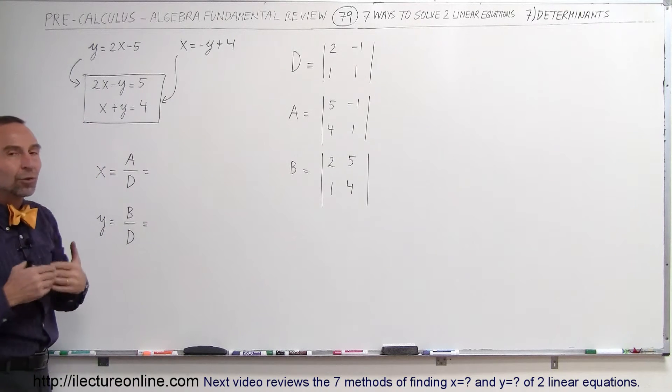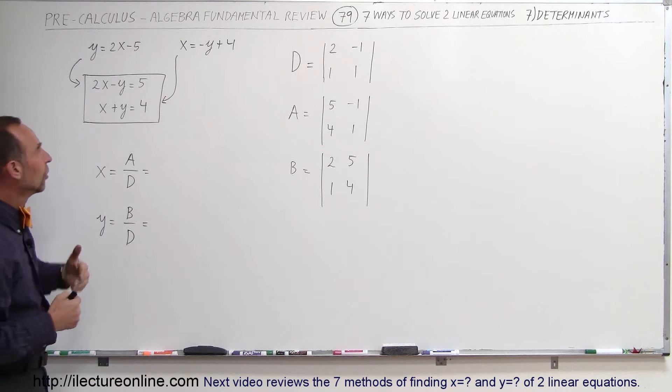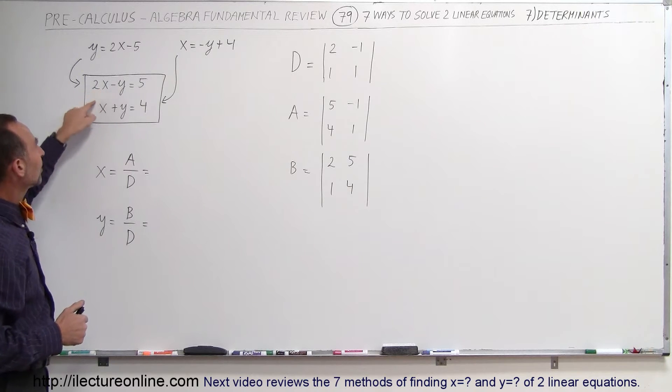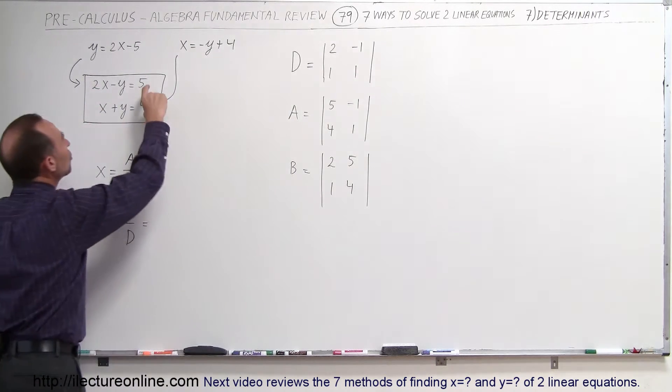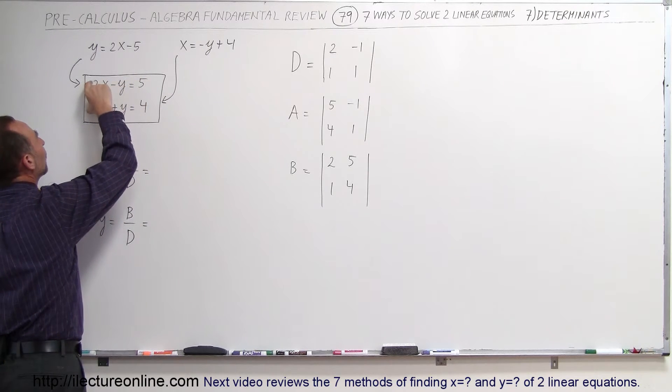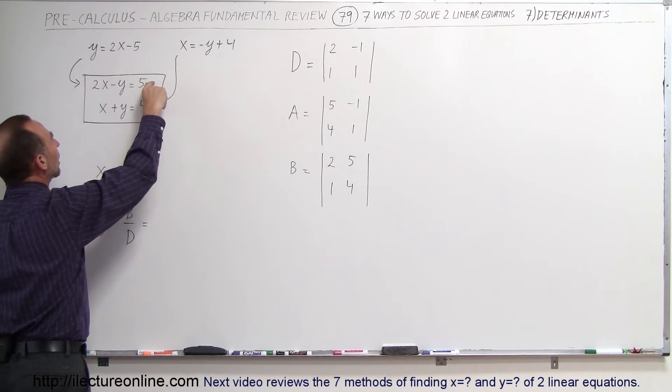Once you do that then you set up three what we call determinants. So we take the coefficients on the x and y and we place them in the first determinant. Then we take the two constants right here and replace the two coefficients in front of the x by these two constants.